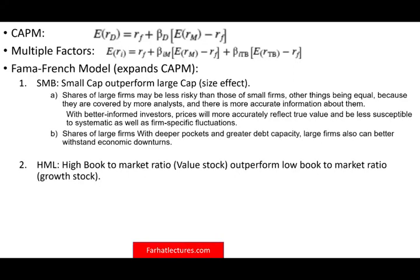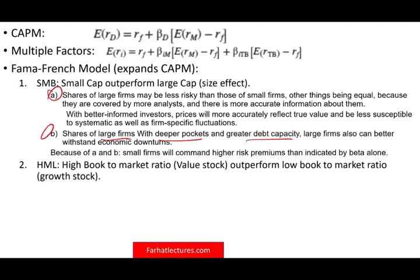Also, shares of large firms like Apple have deeper pockets and greater debt capacity. So in an economic downturn, these firms can withstand downturns. Small caps react differently — because they are less followed and less information means more risk, and more risk means more return. Since small firms don't have deep pockets, they may not withstand economic downturns. Therefore, the beta alone does not give enough justice when computing their expected return. Size does matter — and generally, small cap outperforms large cap.